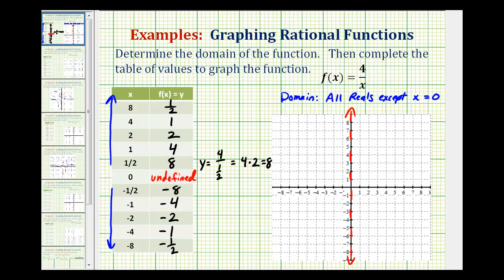Now let's go ahead and plot these points and see if we can make a nice sketch. So 8, 1 half would be here. 4, 1 would be here. 2, 2 is here. 1, 4 is here. And 1 half, 8 would be here. So this piece of the graph would look something like this.